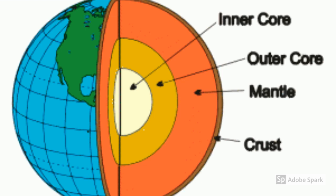Some areas of the crust are relatively thin, only about 6 miles thick, and are found at the bottom of oceans. Other areas are much thicker and range from 25 miles on average to as thick as 60 miles. Because both the continental and oceanic crust are less dense than the underlying mantle, they float on the denser asthenosphere.